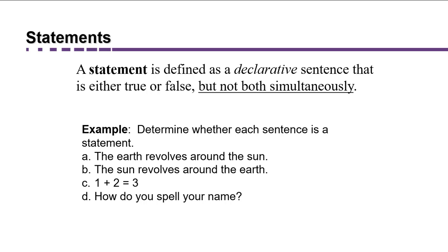How do you spell your name? This fails the very first condition that it be a declarative sentence — it's in fact a question, so it's not a statement. 'This sentence is false' is a tricky one. It is a declarative sentence, but if we assume it's true, it contradicts us; if we assume it's false, it says it's true. So we have a paradox — it can be both simultaneously — and so it's not actually considered a logical statement.